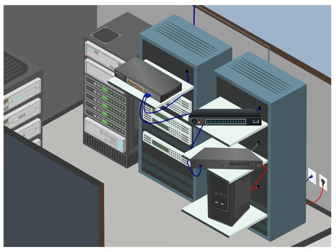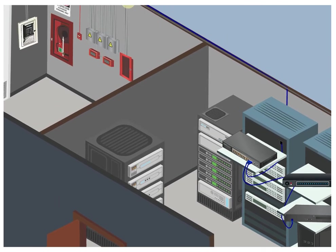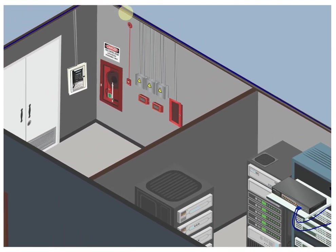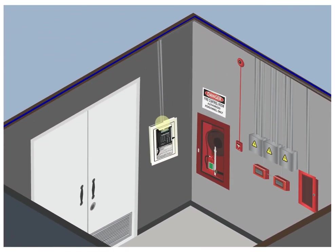Step 5: Run a single twisted shielded pair from the distribution module to the command center. If there are multiple lobby stations, run an additional pair to each lobby unit from the distribution module.